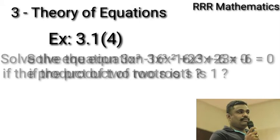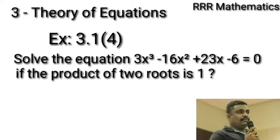Solve the equation 3x³ - 16x² + 23x - 6 = 0, if the product of two roots is 1.